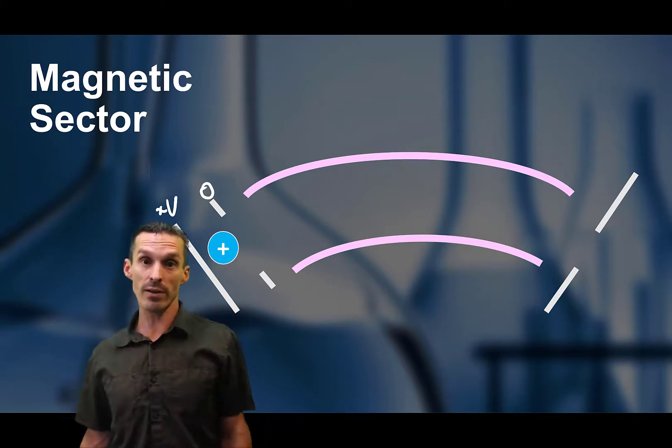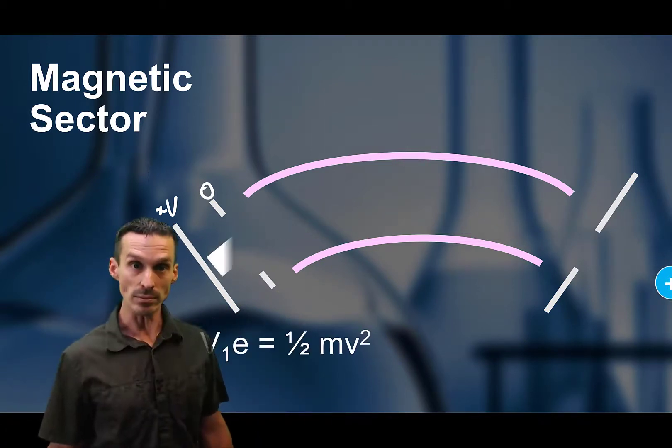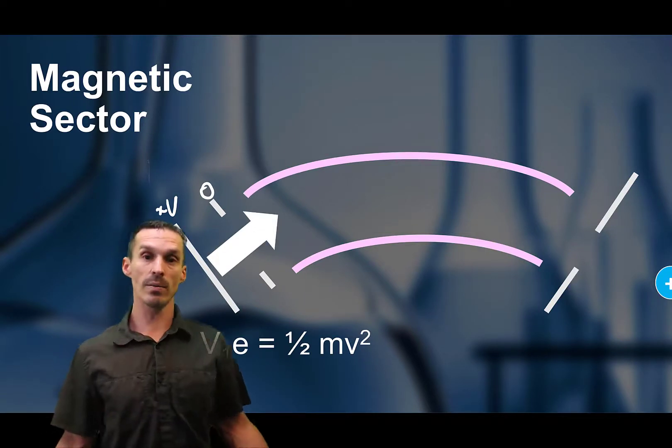Okay, so we have our curved magnetic field. It's pushing the ions, as you see over here. So once again, let's talk about the forces at play.